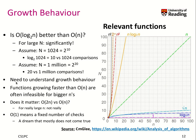We need to understand the growth behavior of the different runtimes of algorithms. Functions growing faster than n are often infeasible for very large n. So let's have a look at our growth table.